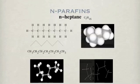The paraffins are a class of molecules which are straight chains of singly bonded carbons. Each carbon is connected to three hydrogens and one carbon at the ends, or two carbons and two hydrogens in the middle. In this slide, there are several representations of heptane, from name and simple formula to three-dimensional representations. The three-dimensional structure reflects the tetrahedral configuration around each carbon.